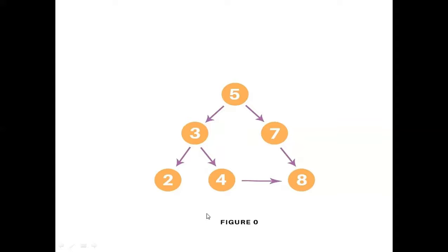Let me explain what BFS is and how it works. Initially node 5 will be expanded — its children are 3 and 7, so they will be added to the queue. Then 3 is the first one to be expanded further. 3 has two child nodes: 2 and 4, which will be added behind 7. So the queue now becomes 7, 2, and 4. Nodes 5 and 3 are already expanded.